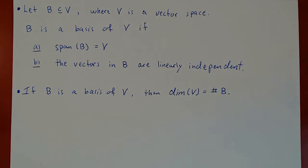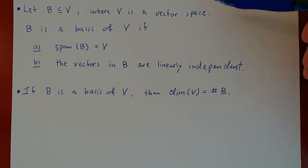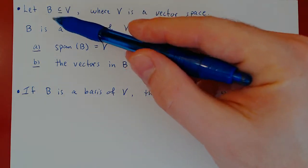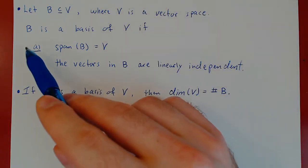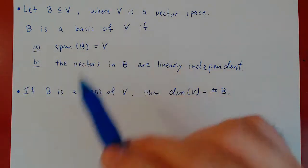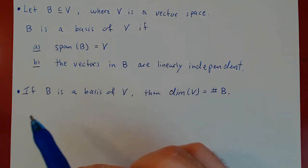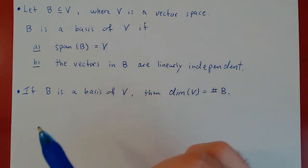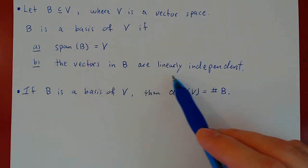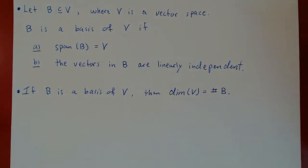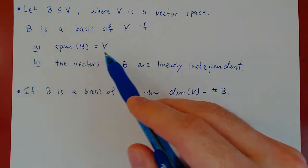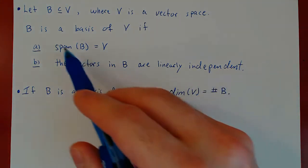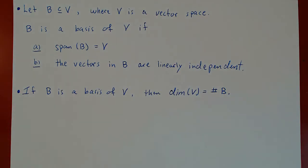In this video, we are going to prove that the dimension of a vector space is well defined. We have a vector space V, and B is a subset of V — a collection of vectors. B is a basis of V if it satisfies two conditions: the span of B gives all of V, and the vectors in B are linearly independent. This means the vectors in B generate the entire vector space, and because they are linearly independent, the generating set B is as small as possible.